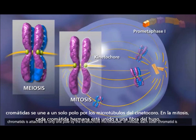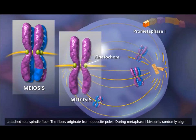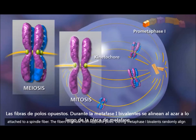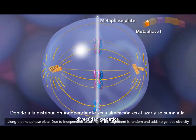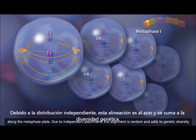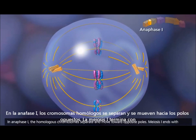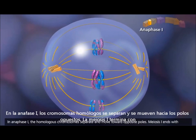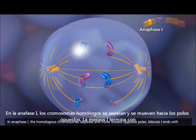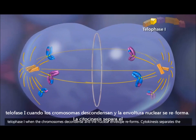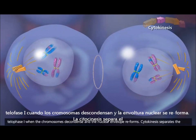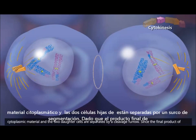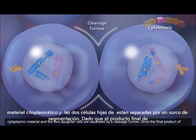In mitosis, each sister chromatid is attached to a spindle fiber, with fibers originating from opposite poles. During metaphase I, bivalents randomly align along the metaphase plate. Due to independent assortment, this alignment is random and adds to genetic diversity. In anaphase I, the homologous chromosomes separate and move toward opposite poles. Meiosis I ends with telophase I, when the chromosomes decondense and the nuclear envelope reforms. Cytokinesis separates the cytoplasmic material and the two daughter cells are separated by a cleavage furrow.